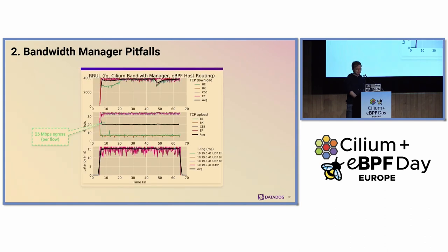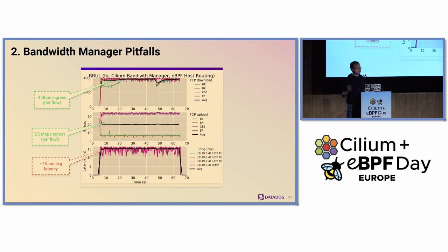With BPF host routing enabled, the egress is still fine, and the ingress got back to 4 gigabit per second — basically the host maximum. However, latency improved from 80 milliseconds to 15 milliseconds, but it is still higher than the baseline, so we looked into it a bit more.